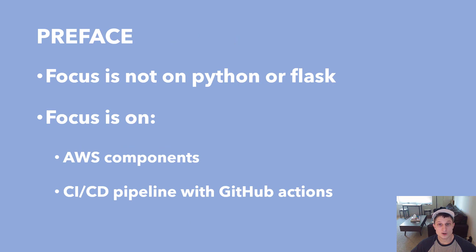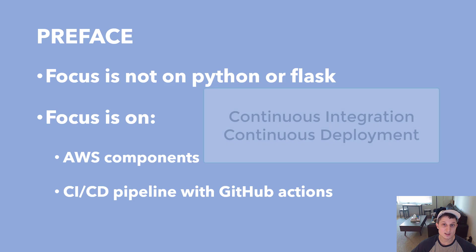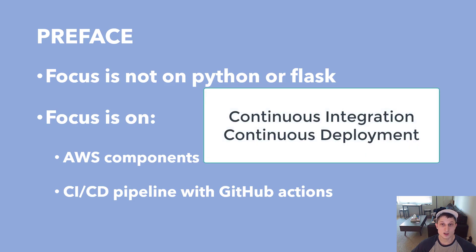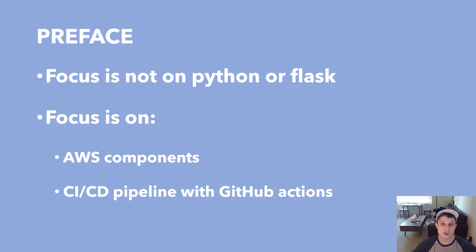To preface this whole series: this is not a series where I'm going to teach you how to code in Python, nor am I going to teach you how to build a Flask application — that's not the point. The point of this series is to get you familiar with the AWS components necessary to host a Flask application on AWS, and also how to create a CI/CD — continuous integration, continuous deployment — pipeline using GitHub Actions, to automatically update your web application on AWS instead of having to do anything manually.